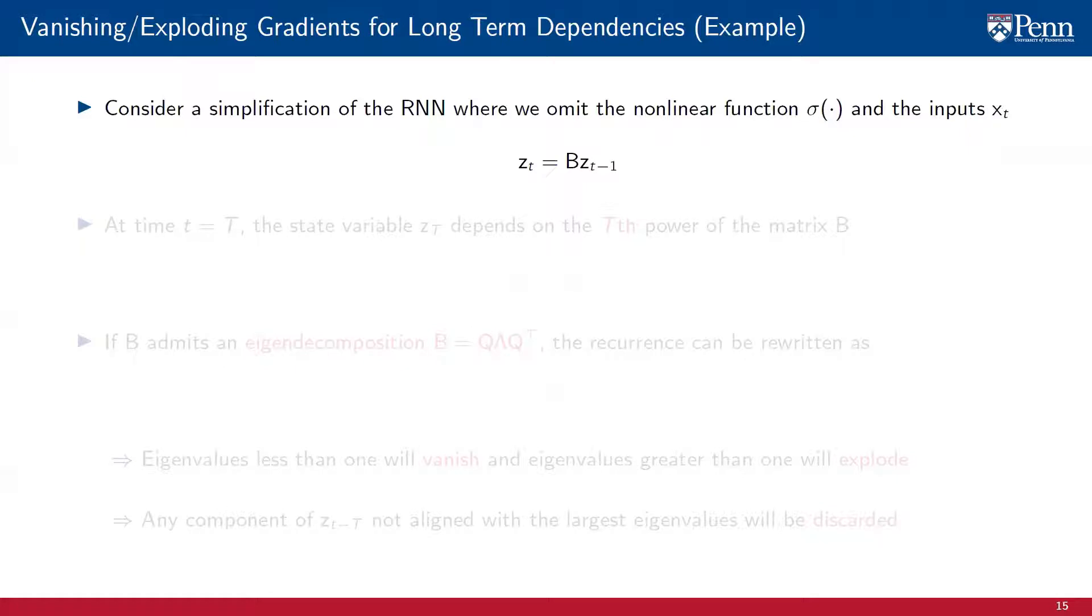To see that, consider a simplified version of the RNN, where we omit the pointwise nonlinearity sigma and the input x_t. That is, in the simplified model, the hidden state is updated simply by multiplying its current value, z_{t-1}, by the weight matrix B. At time T, the hidden state z_t then depends on the T-th power of the matrix B. That is, z_t is given by the product between B to the T-th power and z_{t-T}.